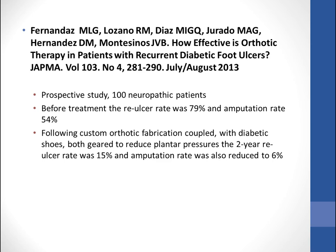This next paper is from 2013: 'How Effective is Orthotic Therapy in Patients with Recurrent Diabetic Foot Ulcers?' This was a prospective study with 100 neuropathic patients. The before-treatment re-ulcer rate was 79% and the amputation rate was 54%. Following custom orthotic fabrication coupled with a diabetic shoe — both geared to reduce plantar pressures — the two-year re-ulcer rate was 15% and the amputation rate was reduced all the way down to 6%. Additionally, 100% of patients were on sick leave before treatment, and this was reduced down to only 26%.